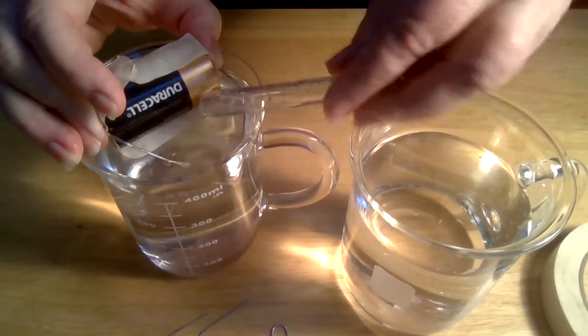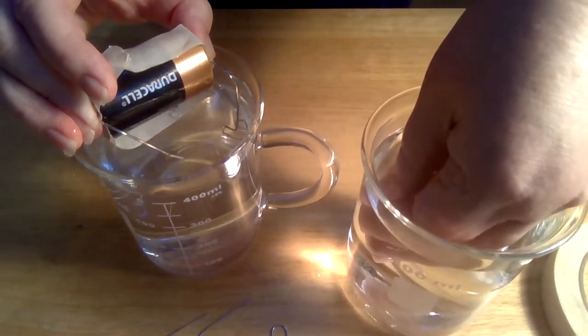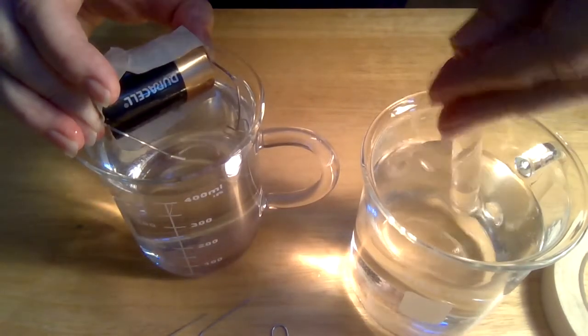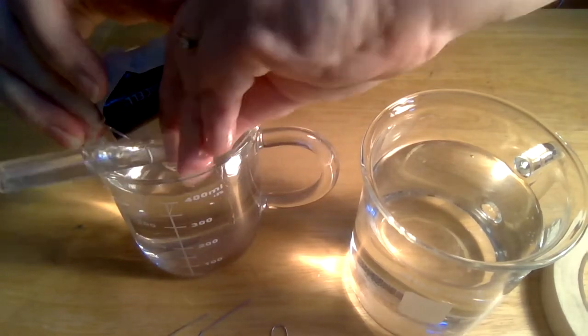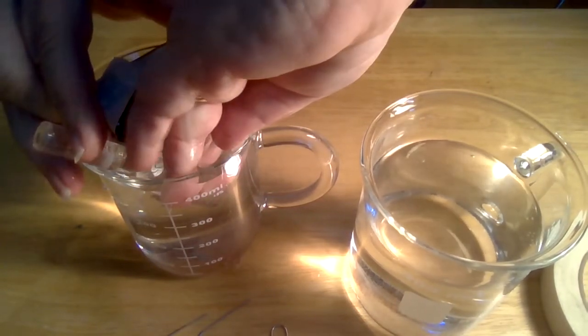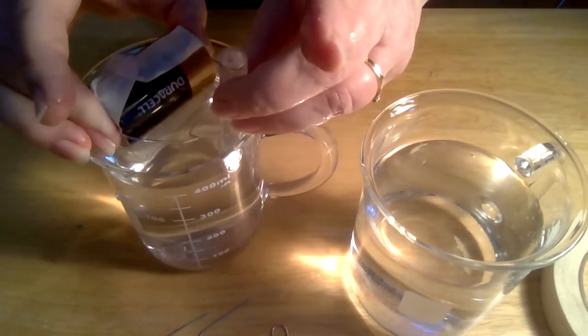I'll do that one more time. I've got my test tube and it's full of water. I cover it with my thumb and then I invert the whole thing. Then I have to put my whole hand under the water so that I can get the now top of the test tube, which is at the bottom, under the water.